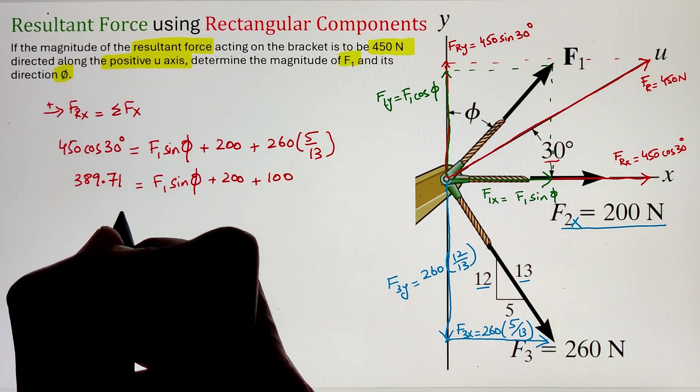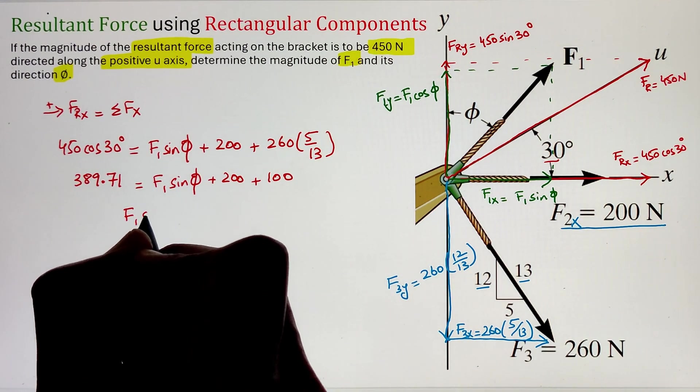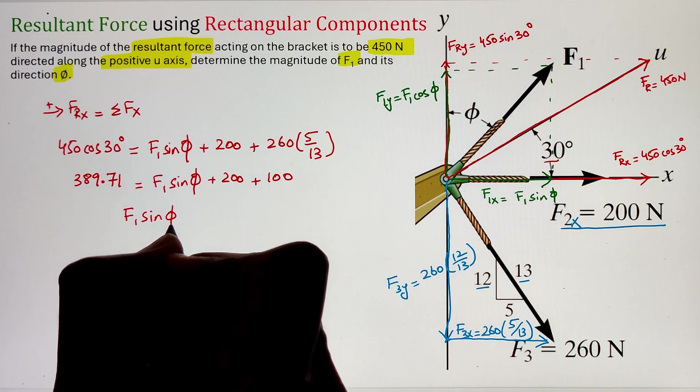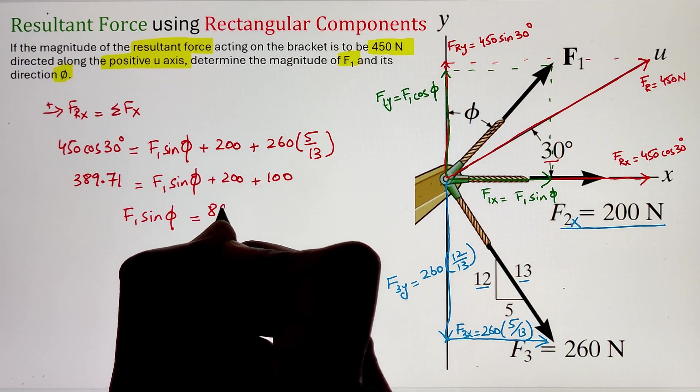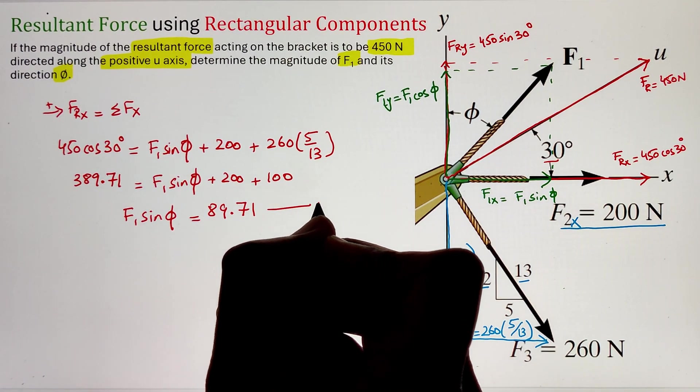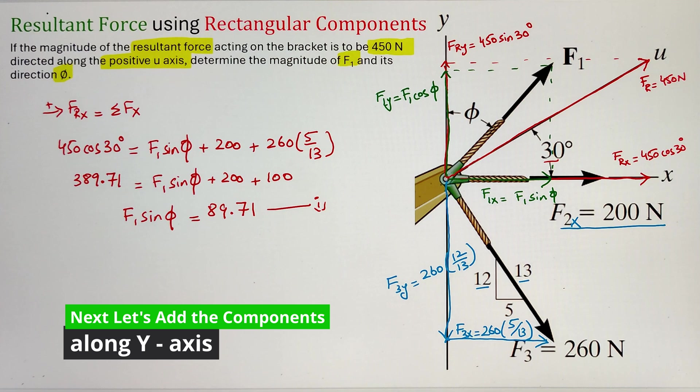Next, we can go ahead and simplify this equation, and here we are getting F1 sine phi equals 89.71. Let's mark this as our equation 1.